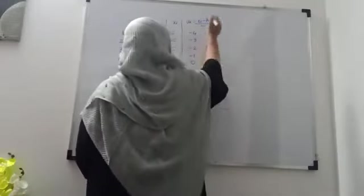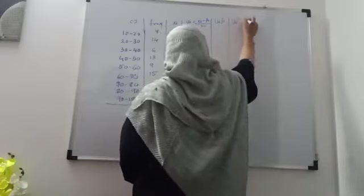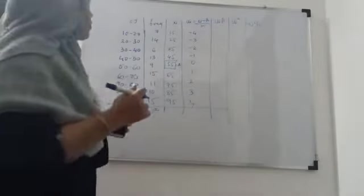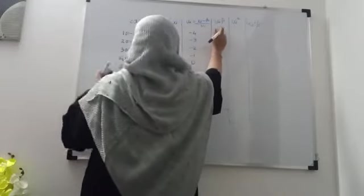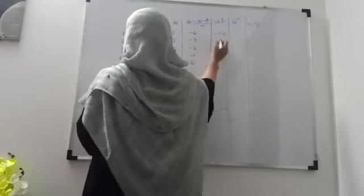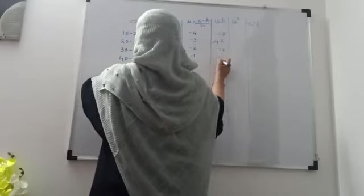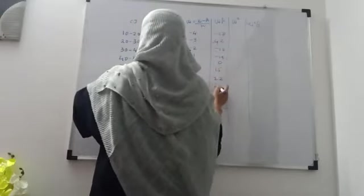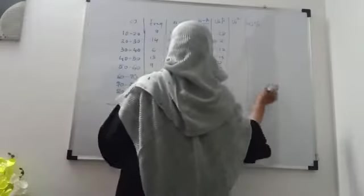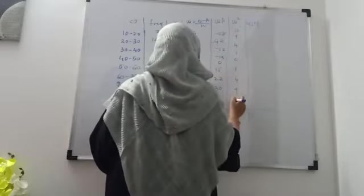We need columns for fᵢ·uᵢ and uᵢ². For fᵢ·uᵢ: 7×(−4) = −28, 14×(−3) = −42, 6×(−2) = −12, 13×(−1) = −13, 9×0 = 0, 15×1 = 15, 11×2 = 22, 10×3 = 30, 15×4 = 60. For uᵢ²: 16, 9, 4, 1, 0, 1, 4, 9, 16.